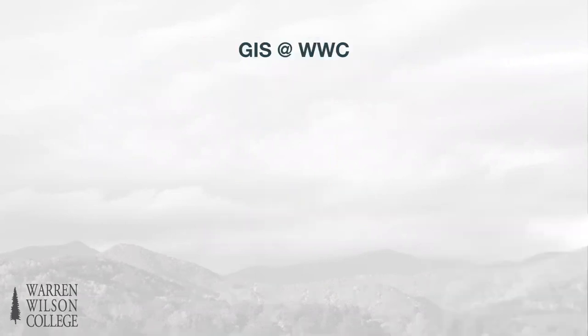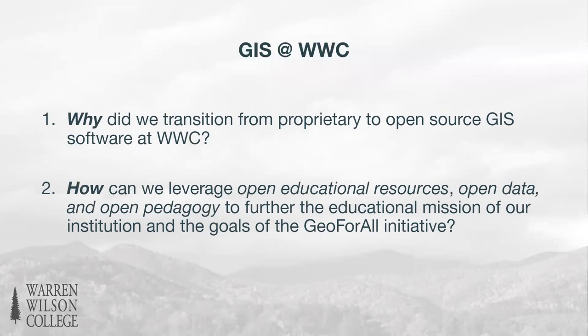I'm going to frame this in two main bullet points. First, talk about why we transitioned from proprietary software to almost exclusively open source software in our GIS courses at Warren Wilson College — that was our first step in moving from closed to open. And then second, how we can leverage additional layers of openness: open educational resources, open data, and open pedagogy to further the educational mission of our institution as well as the goals of the Geo for All initiative.